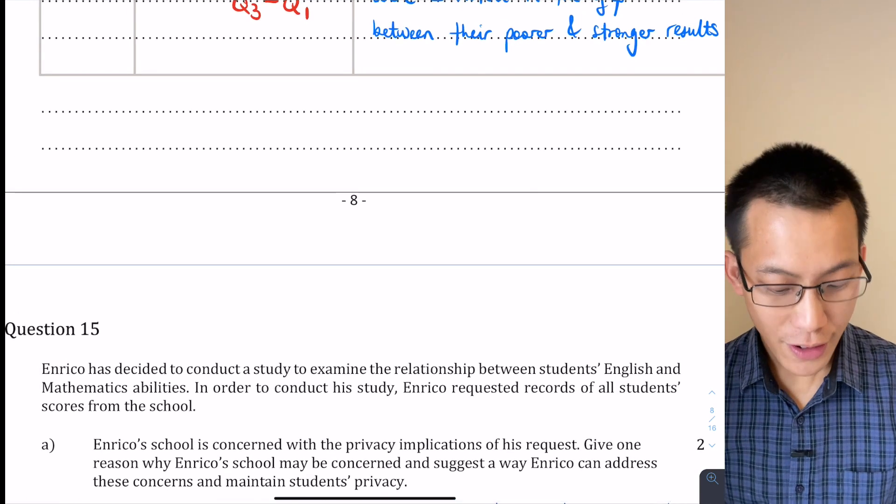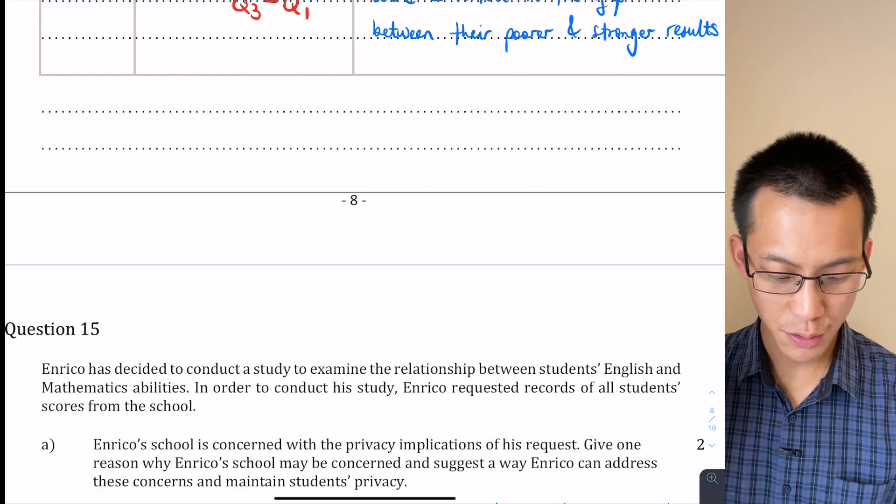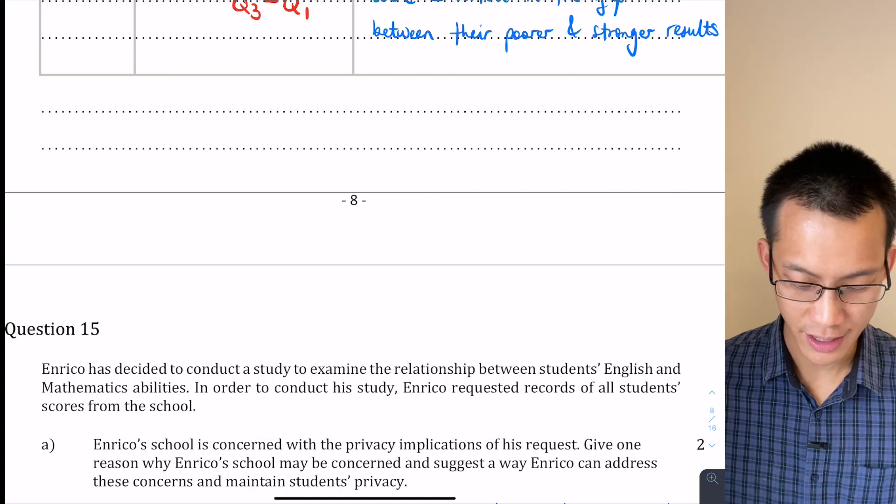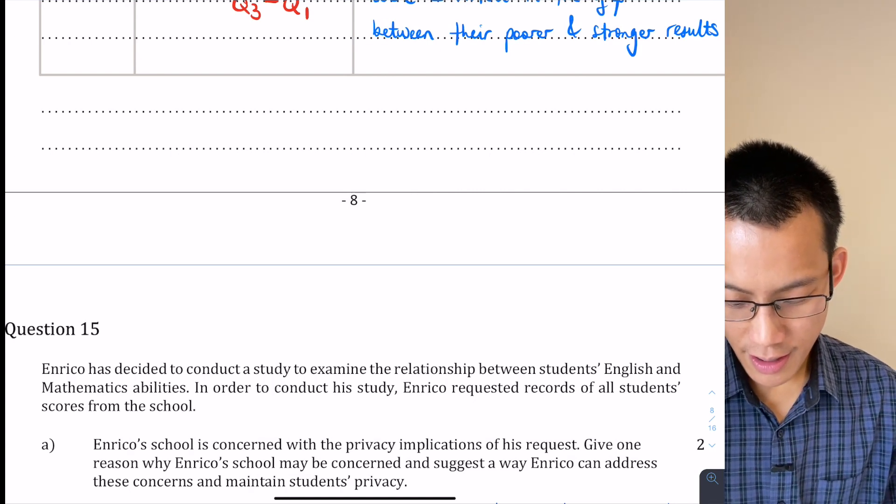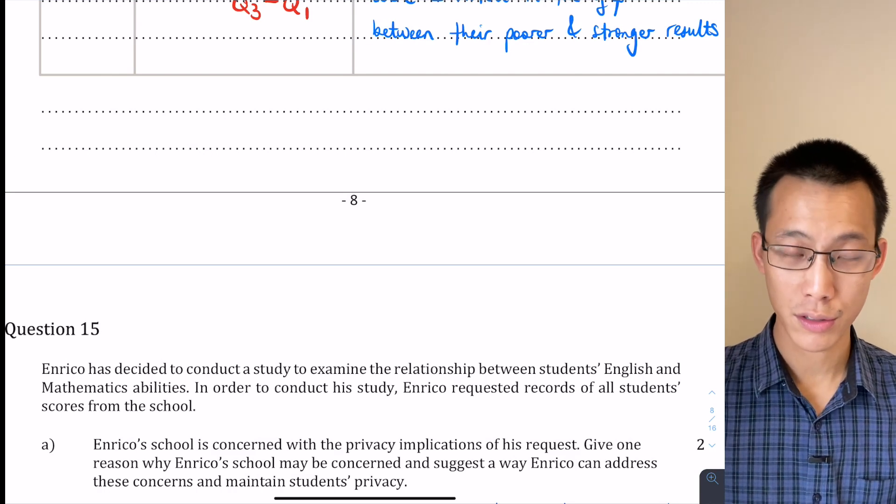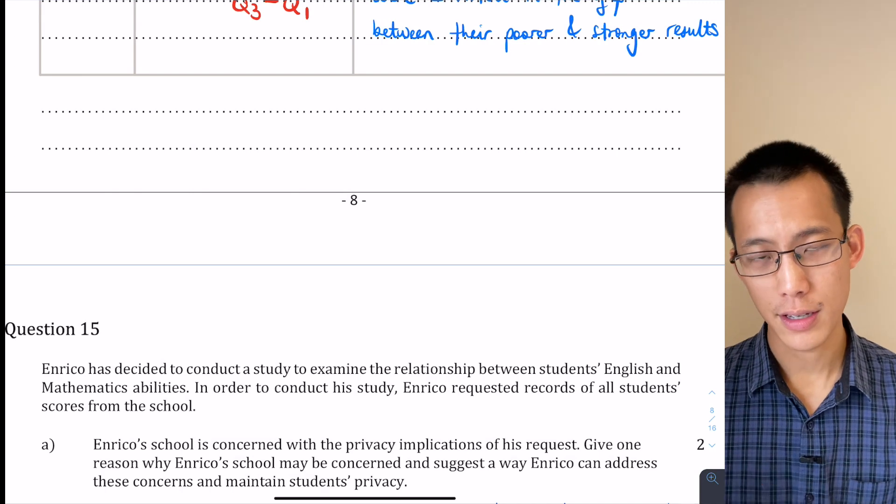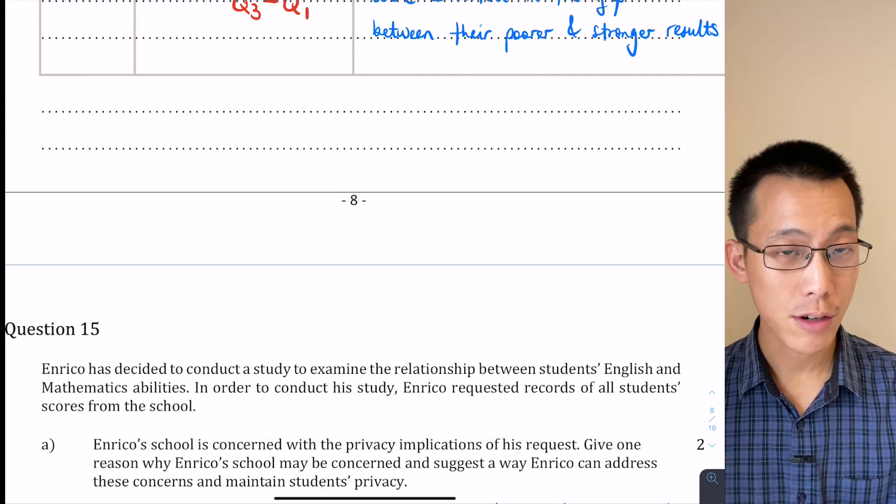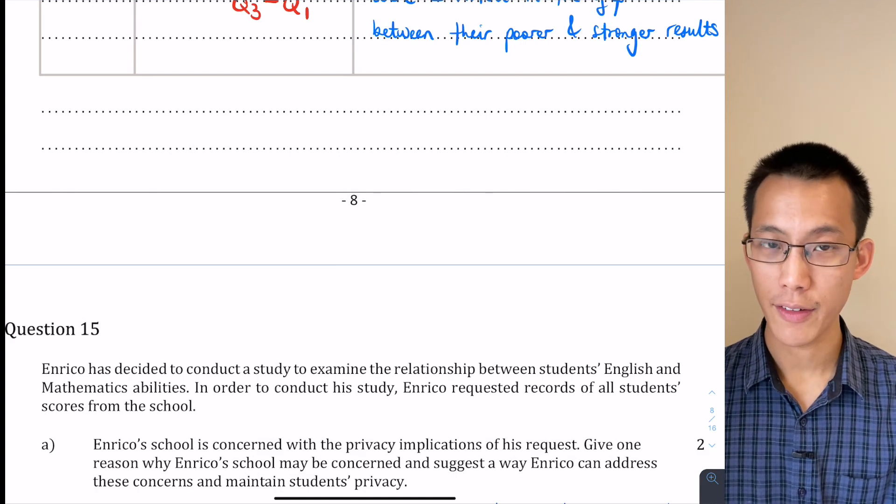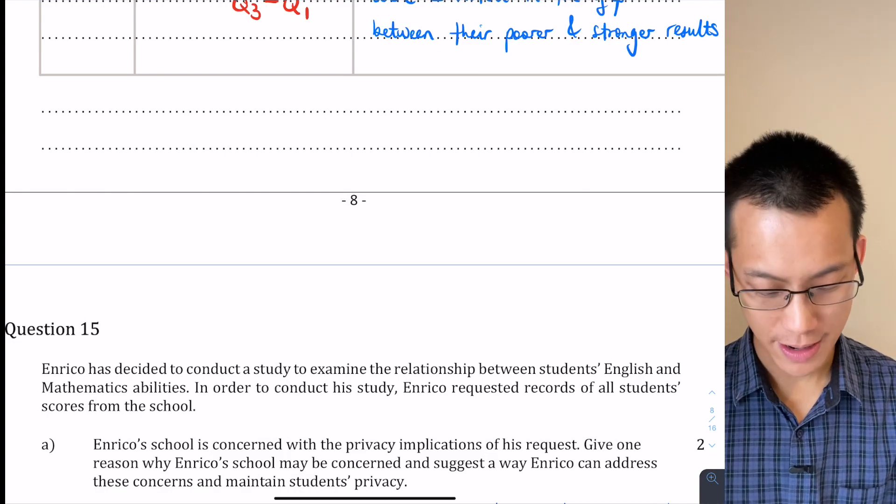So you got Enrico and he's decided to conduct a study to examine the relationship between students' abilities in these two different KLAs, these two key learning areas. In order to conduct his study, Enrico has requested records of all student scores from the school. So one of the really important issues that we need to think about in using statistical measures is their ethical considerations. The school is concerned with the privacy implications of the request. Give a reason why they may be concerned and suggest a remedy.